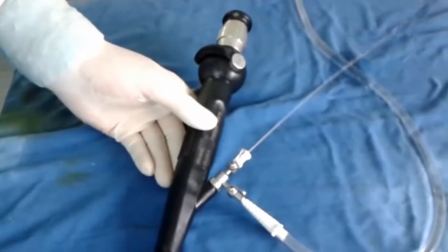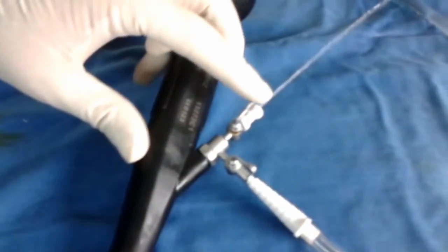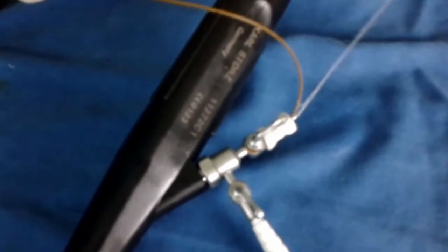When using the flexible nephroscope, there is a large outflow of irrigating fluid with the standard rubber gap, especially when using a basket or a guide wire.